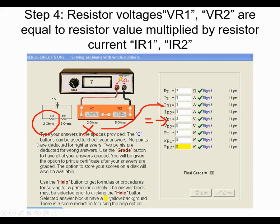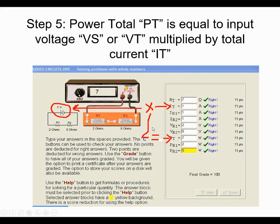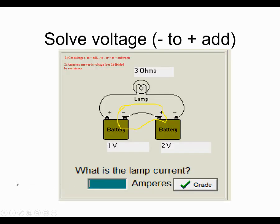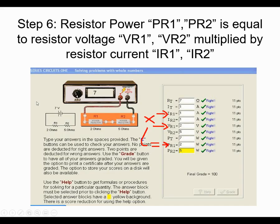Next, here's how you get the individual resistor voltage values — that's the current value times the resistor ohm value, which gives you the voltage across each resistor. Then you want to get the power total: that's the current times the voltage, in this case 7 times 1, so 7 watts. And then for getting the power across the individual resistors, it's the current across the resistor times the resistor voltage.